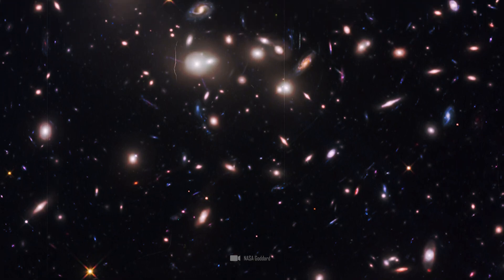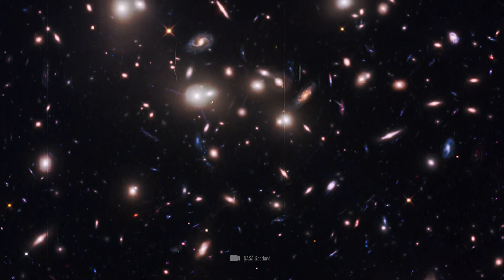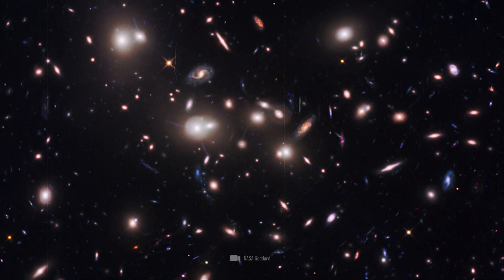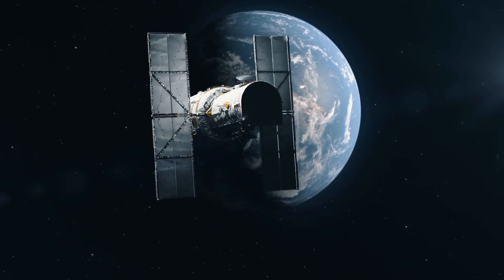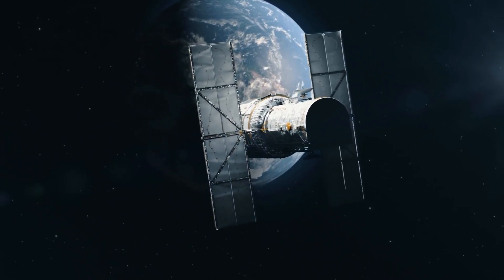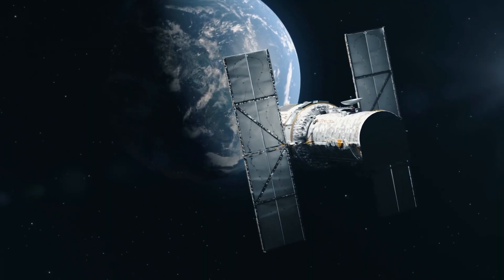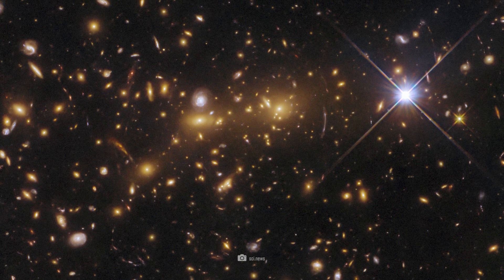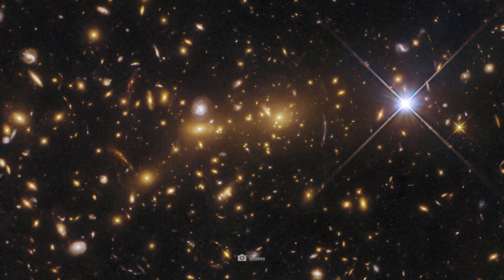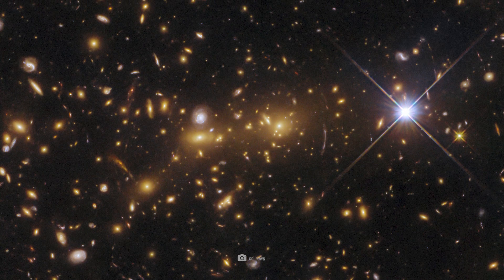Without the gravitational lensing effect, its light would have been too faint to be detected with current technologies. The old Hubble Space Telescope had already provided clues about the galaxy. However, Hubble's images were too blurred. The JWST has now used its NIRCAM to investigate this discovery in more detail.